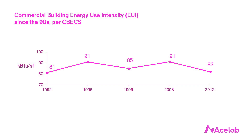And the data does not look very encouraging. The average commercial building in 1992 used 81 kBTUs per square foot. And in 2012, the average commercial building used 82 kBTUs. 2012 is the most recent year we have data.